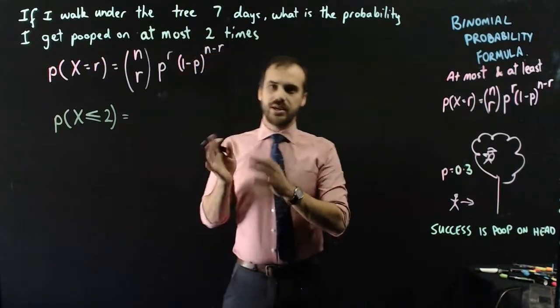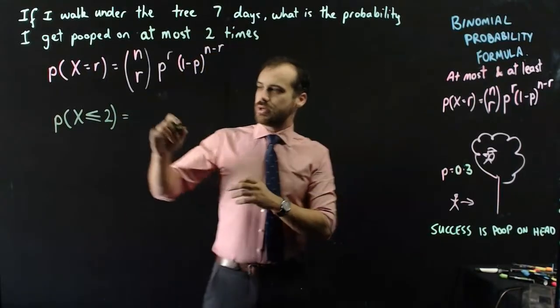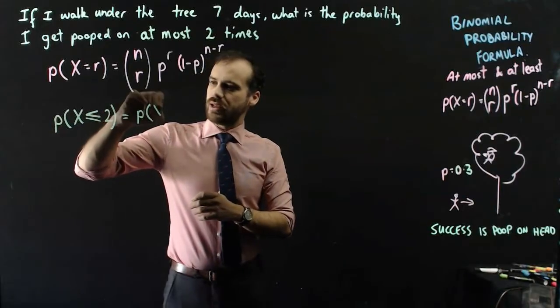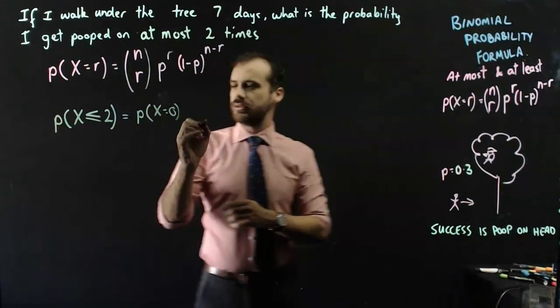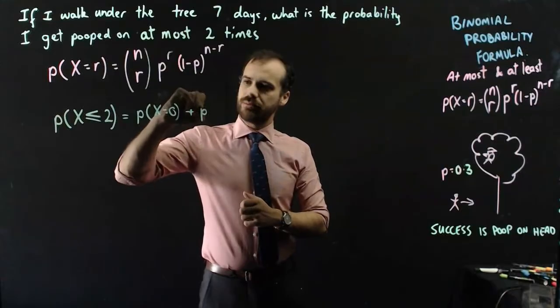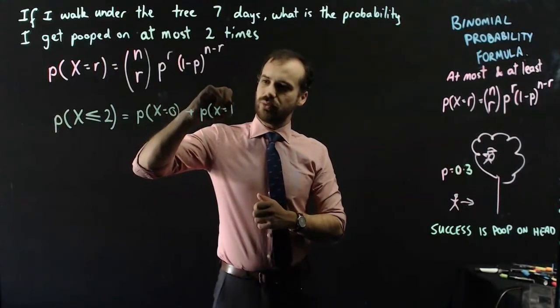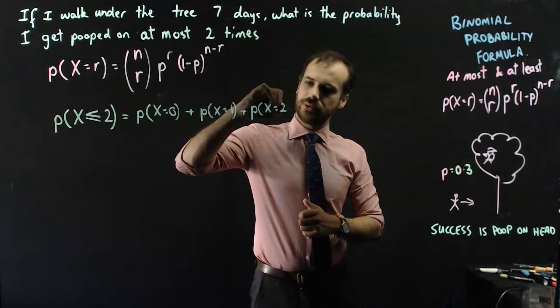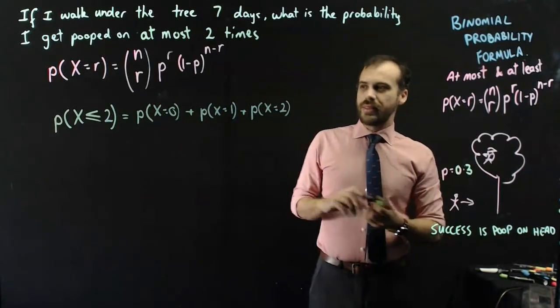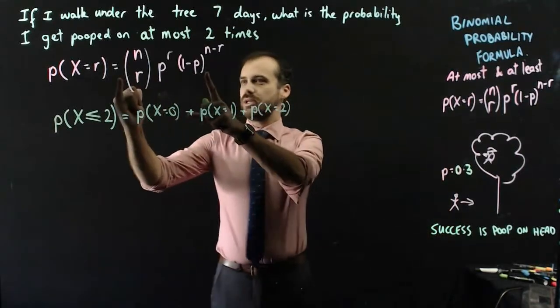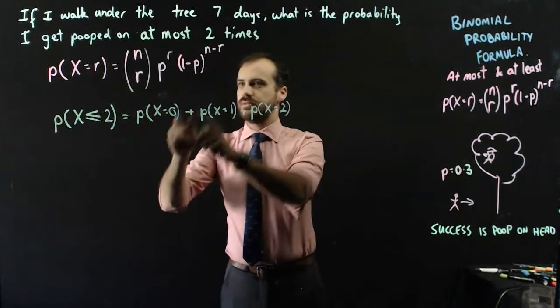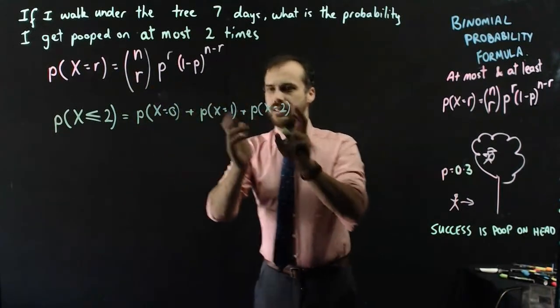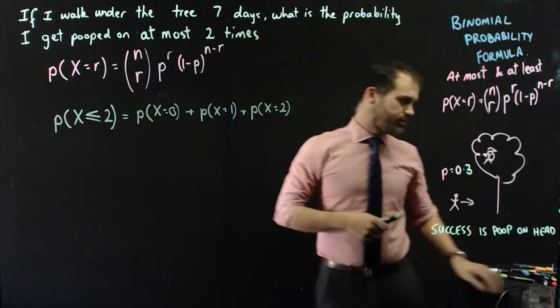So what's that going to be equal to? It's going to be equal to the probability that x is equal to 0, plus the probability that x is equal to 1, plus the probability that x is equal to 2. And now we need to do this formula three times.